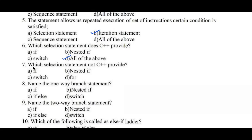Question number seven: which statement does C++ not provide as a selection statement? Option A: if, B: nested if, C: for loop, D: all of the above. Here, the for loop is an iterative statement — it is not a selection statement. Hence option D is the right answer.